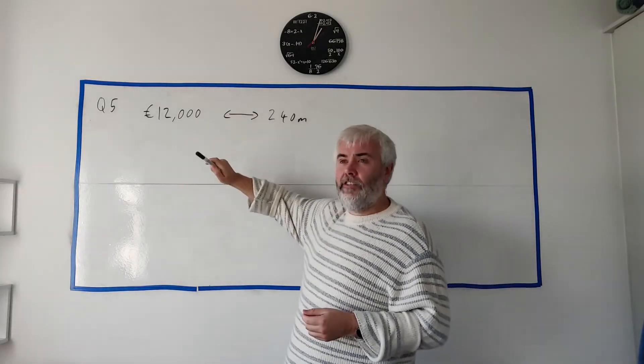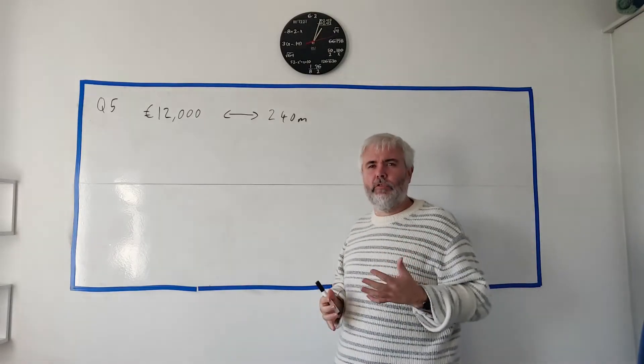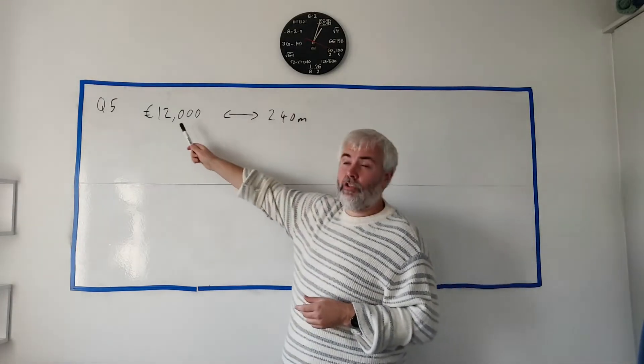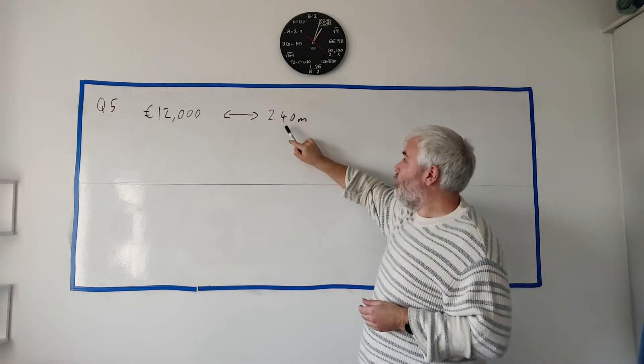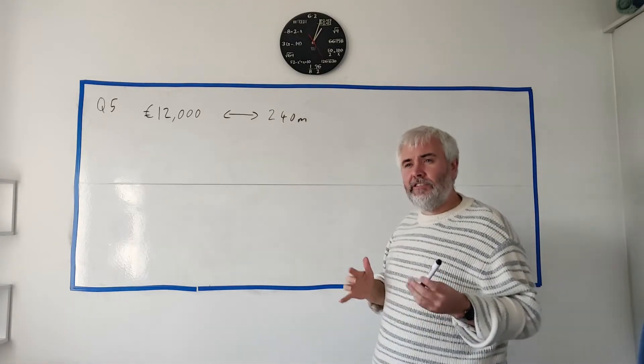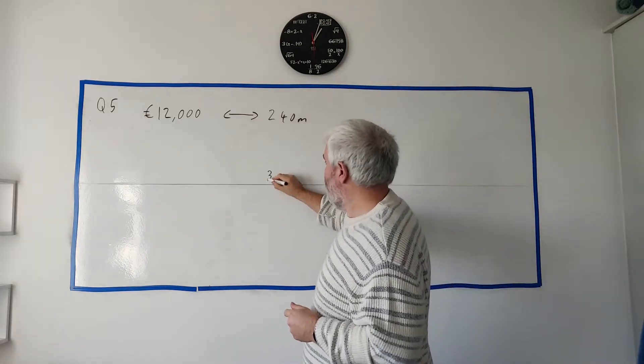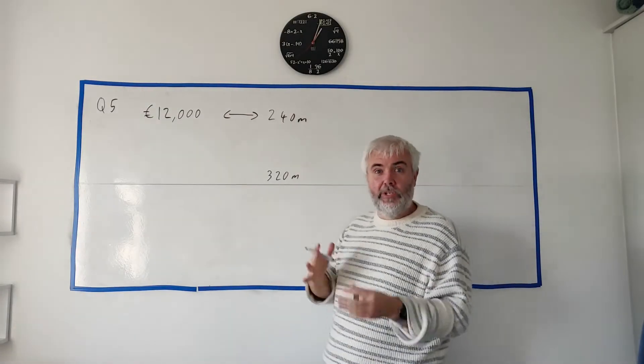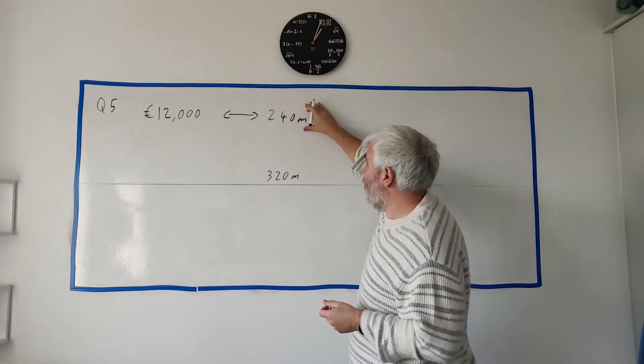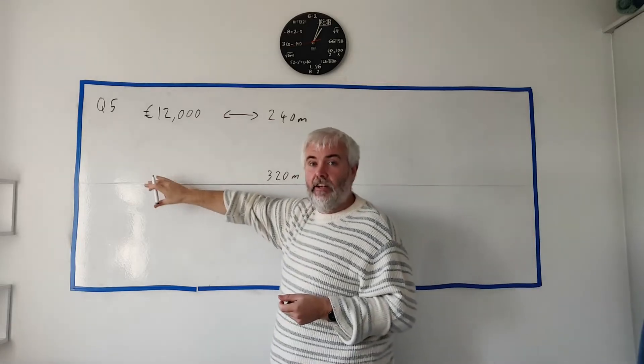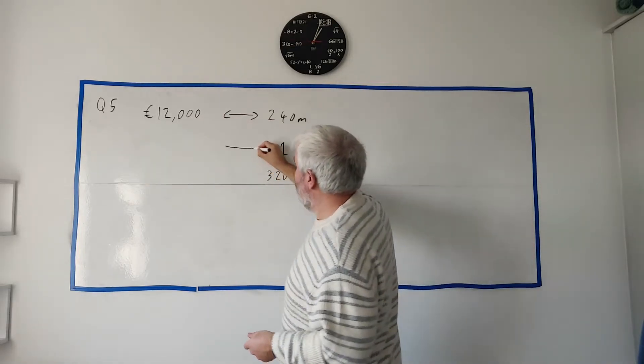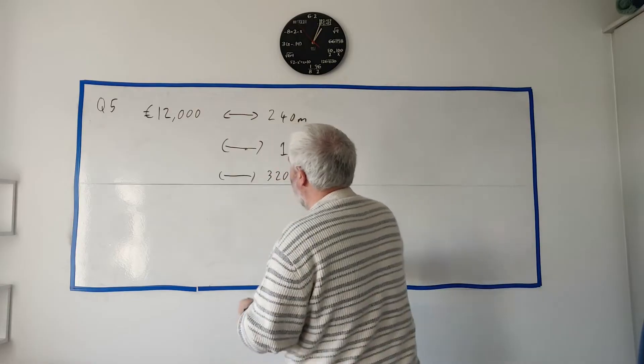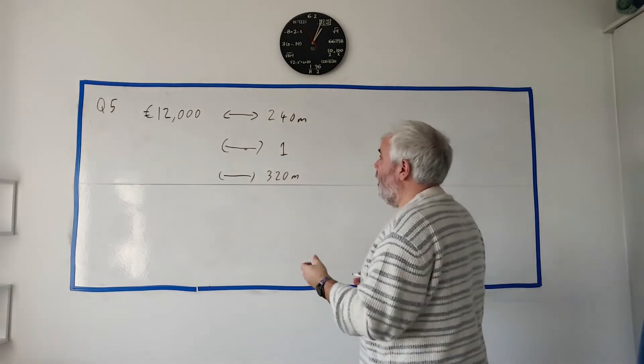5A part one starts off by telling us a story about a company repairing train tracks. It costs 12,000 euros to lay 240 meters of train track and they ask us to work out how much it would cost to lay 320 meters. If I want to change something from 240 meters to 320 meters, I just change it to one first. I find out 12,000 goes to 240, what goes to one? And then it's easy to change from one to anything.